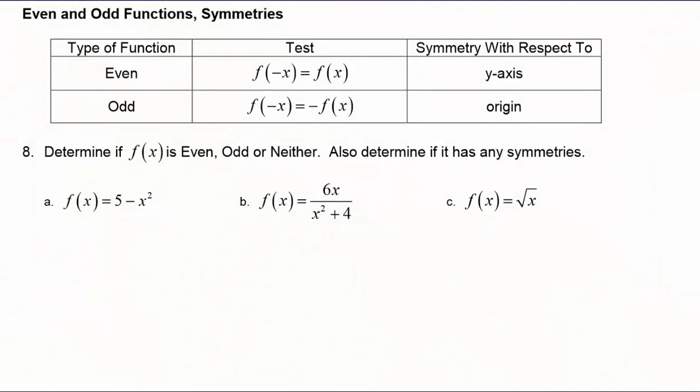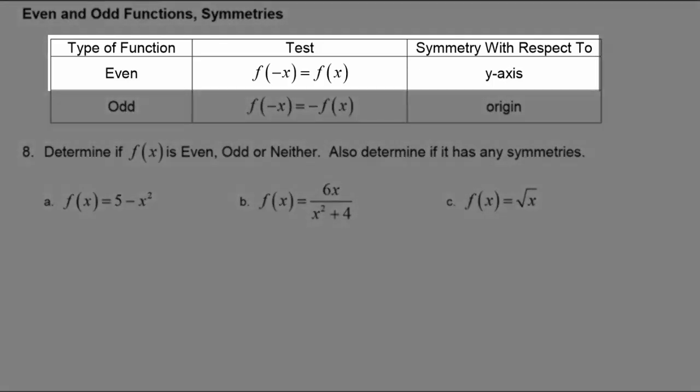The test is really simple to do. You plug in negative x to the function and simplify it. If f of negative x is equal to f of x, then we say f is even and it will have symmetry with respect to the y-axis.